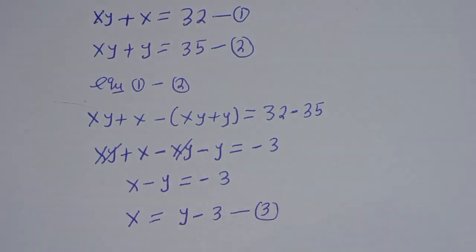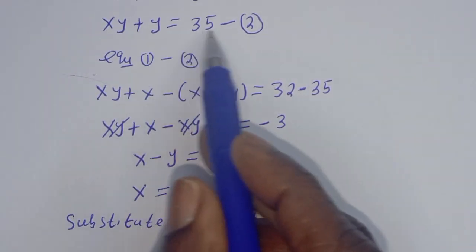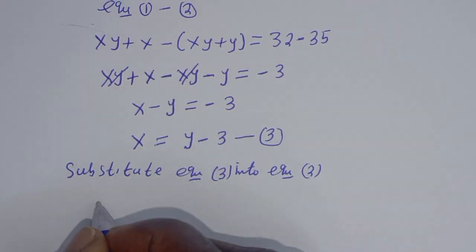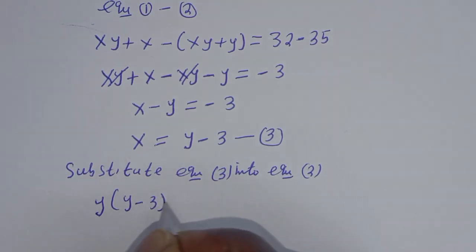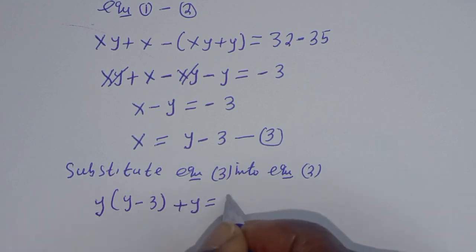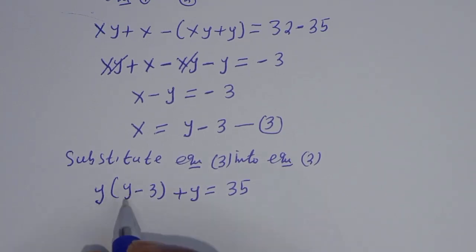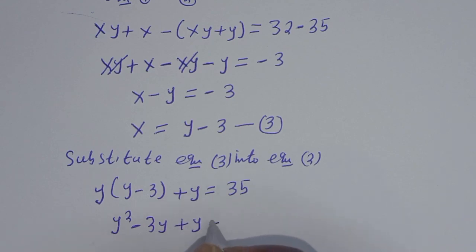Let's substitute equation 3 into equation 2. This gives us y times (y minus 3) plus y is equal to 35. Expanding: y squared minus 3y plus y is equal to 35.